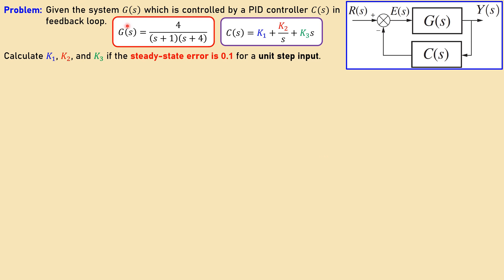Let's look at our problem. We have the following system G(s), given as a second-order system that is already open-loop stable, which is then controlled by the PID controller C in the feedback loop. C is given by the expression k1 plus k2 over s plus k2·k3·s — a very generic expression representing the proportional (P), integral (I), and derivative (D) terms. For this configuration we would like to calculate k1, k2, and k3 such that the steady-state error is 0.1. We have three unknowns and the input is a unit step.